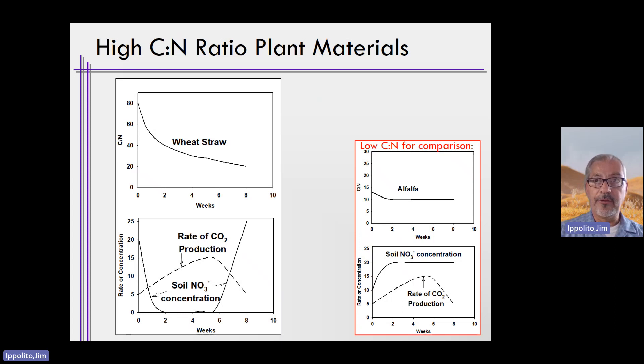Wheat straw, in this illustration, has a carbon to nitrogen ratio of 80 to 1. Why is it so high? Wheat straw itself is so high in terms of carbon to nitrogen ratio because the nitrogen, not all of it but quite a bit of it, has been translocated to the grain that we as humans harvest. Thus, the carbon to nitrogen ratio in the straw itself is high.